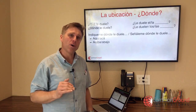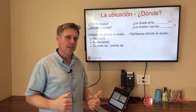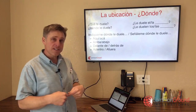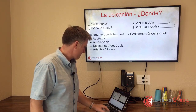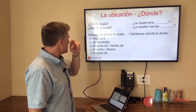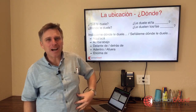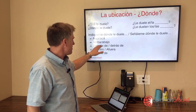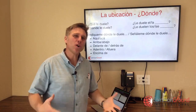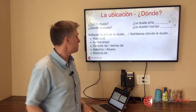Some vocabulary and prepositions around locations: aquí and acá both mean here with no difference between them. Arriba or abajo — above or below. Delante de or detrás de — in front of or behind. Adentro — inside, or afuera — outside. Encima de — on top of. For example: me duele aquí, or me duele el abdomen — ¿dónde en el abdomen? — abajo or arriba.